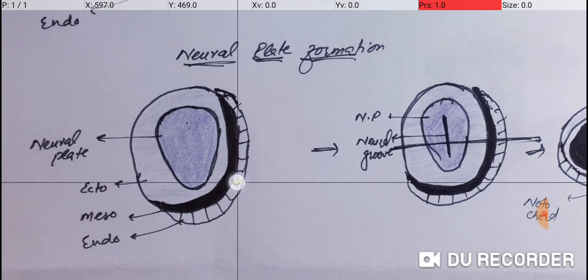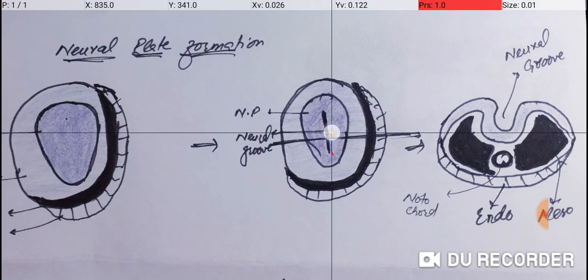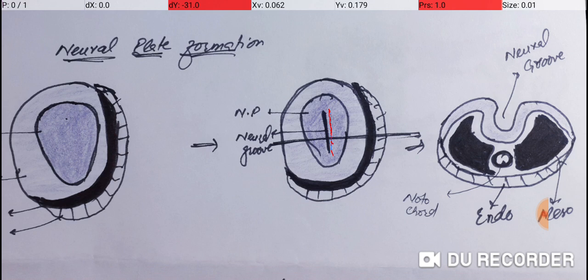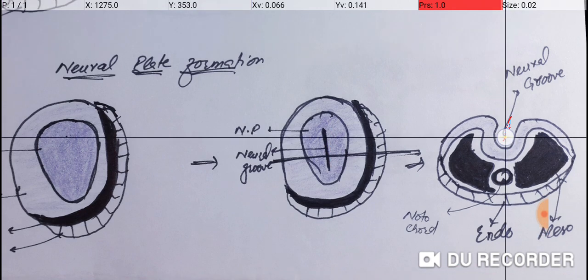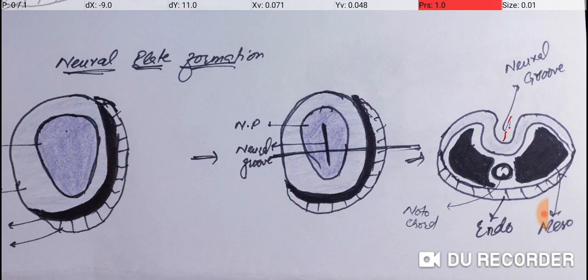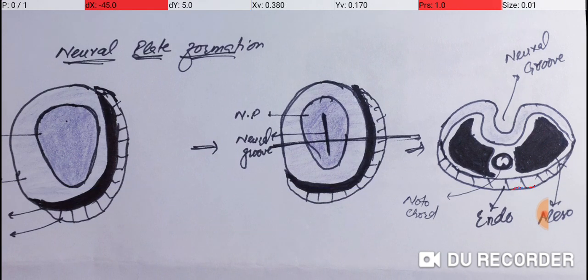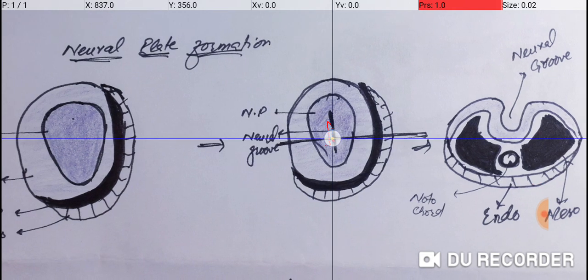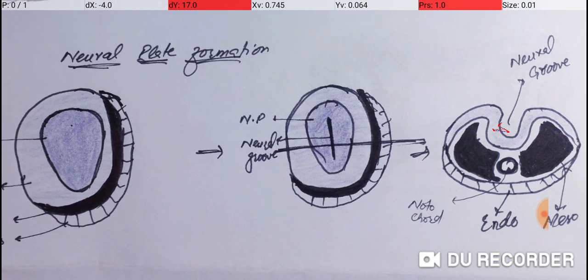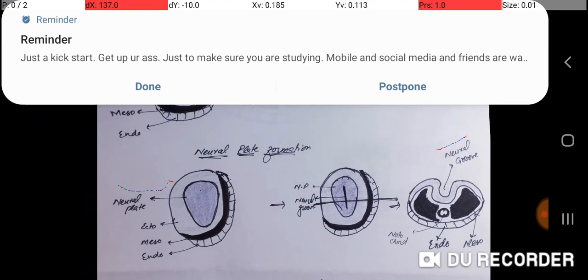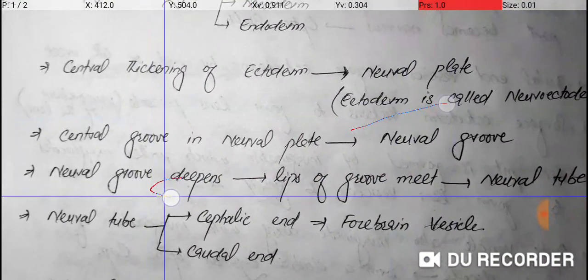Next, a groove appears in the center of the neural plate. This groove deepens with time, as shown in the cross-section here. You have the outer ectoderm, the mesoderm, and the endoderm — all three layers are shown — as well as the neural groove that appears in the neuroectoderm. Here is your ectoderm and here is the neural groove that appears in the neural plate.